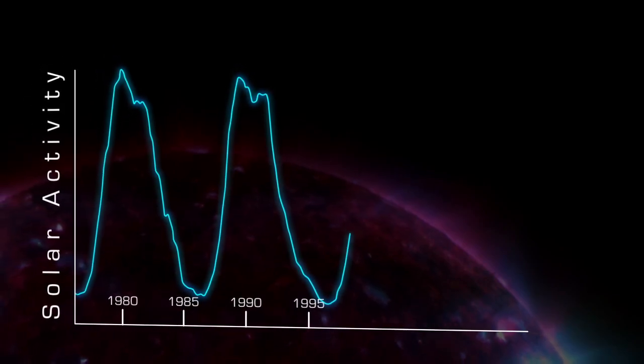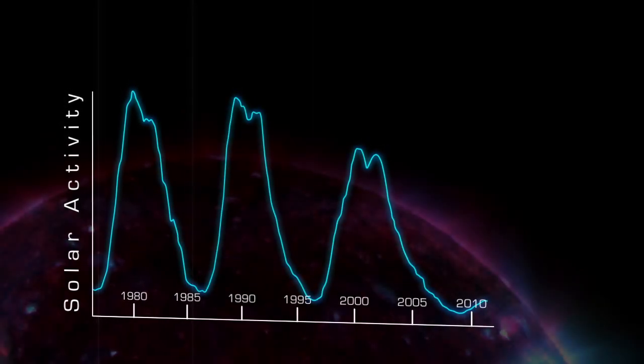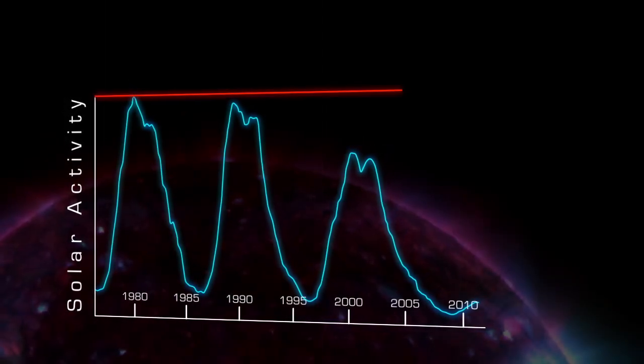This pattern is called the sunspot cycle, and a single cycle lasts for about 11 years, although it can be as short as 8 or as long as 14, and it can vary dramatically in intensity.